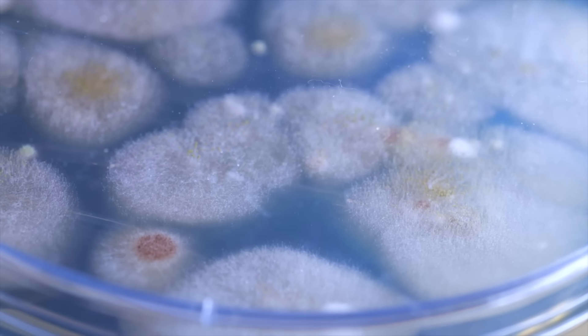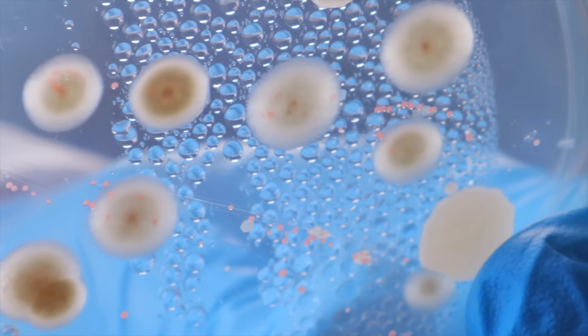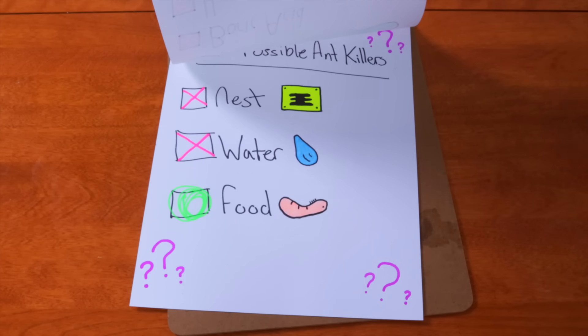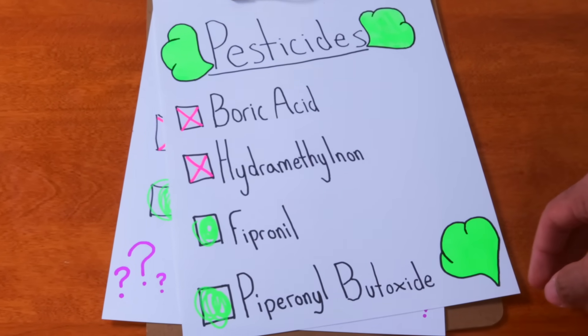Mold itself isn't an ant killer. It can be in large quantities, but since the ants have a strong immune system, they can cohabitate with small amounts of mold with little to no issue. So it couldn't have been this. Which means, our colony killer was undoubtedly the pesticides.